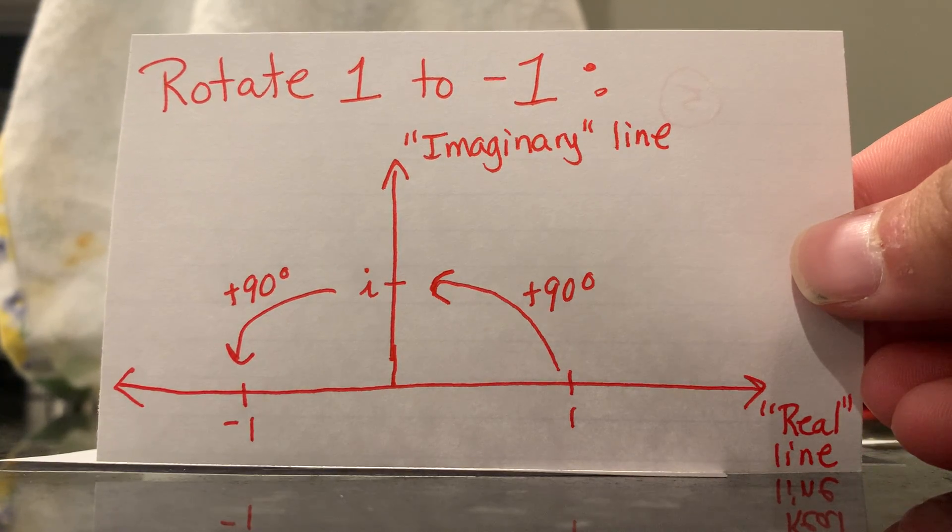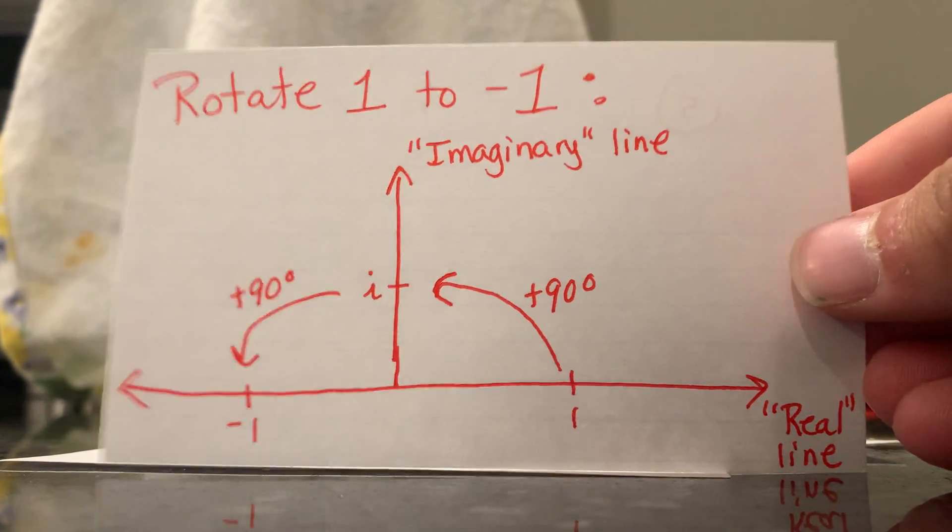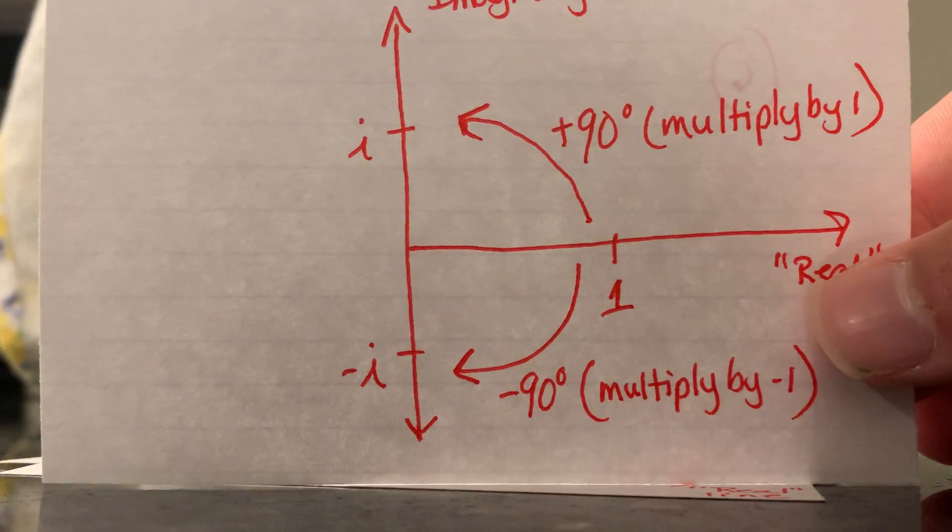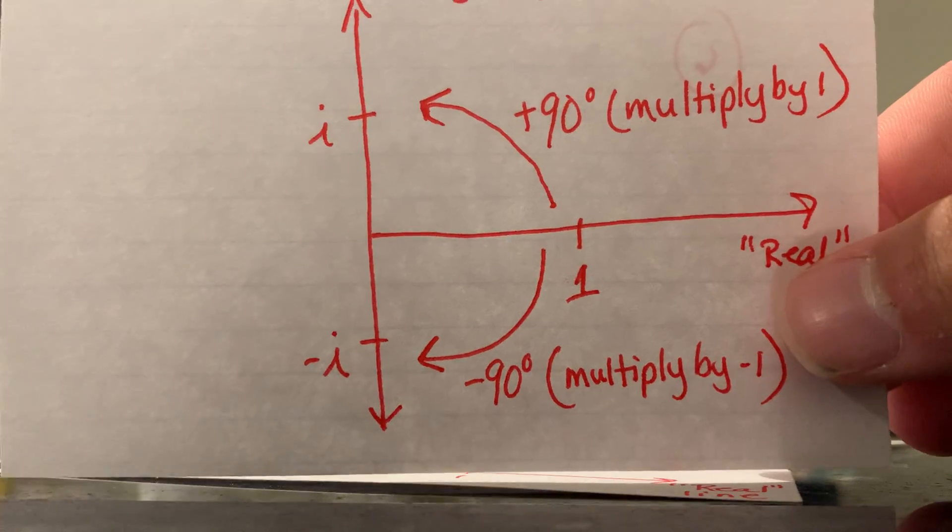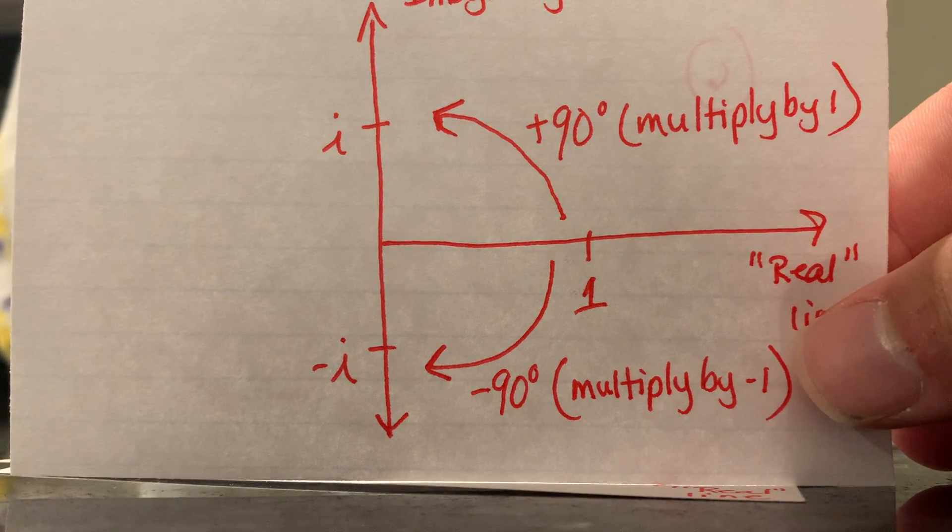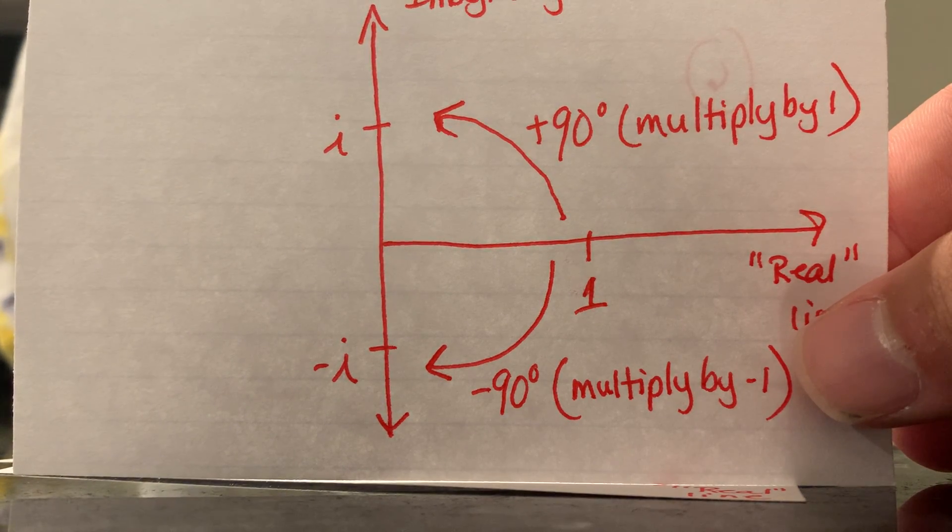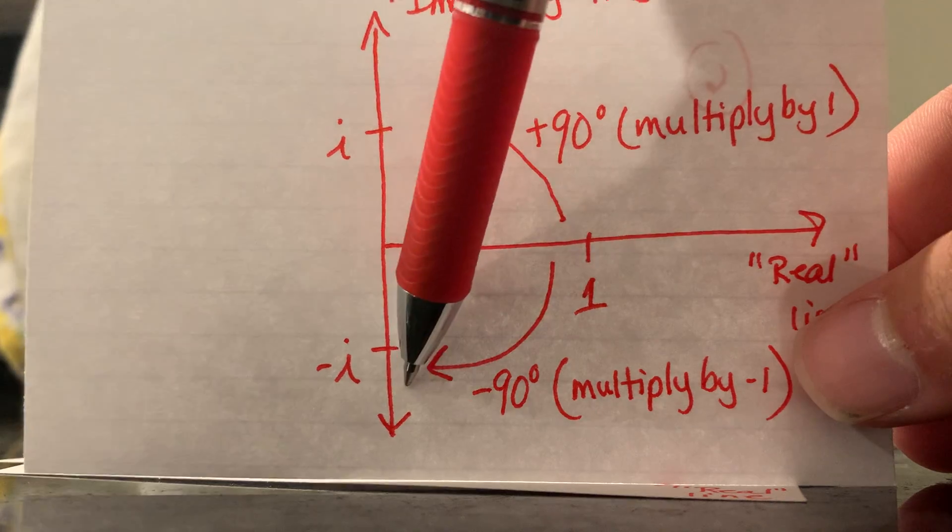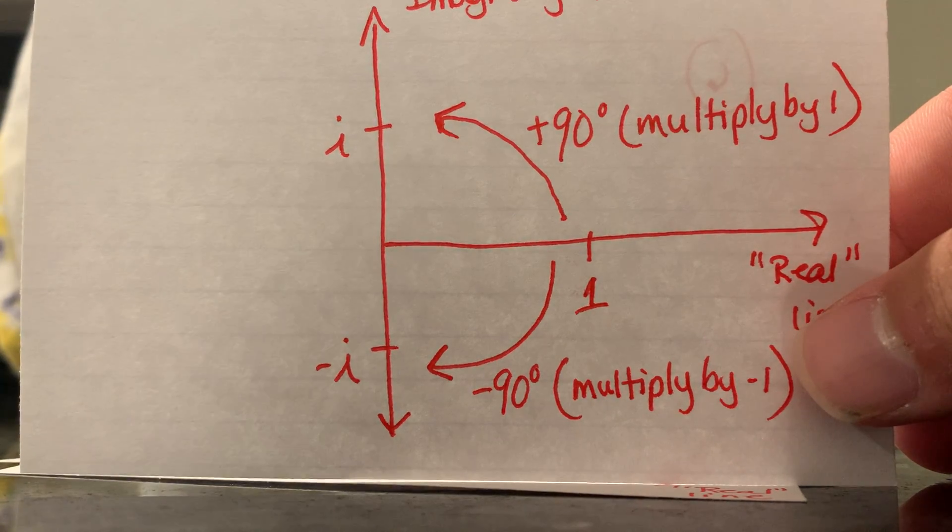And if you think about it even more, we could rotate twice in the other direction, which is clockwise, to turn one into negative one. This negative rotation, or multiplying by negative i, so that there are really two square roots of negative one: i and negative i.